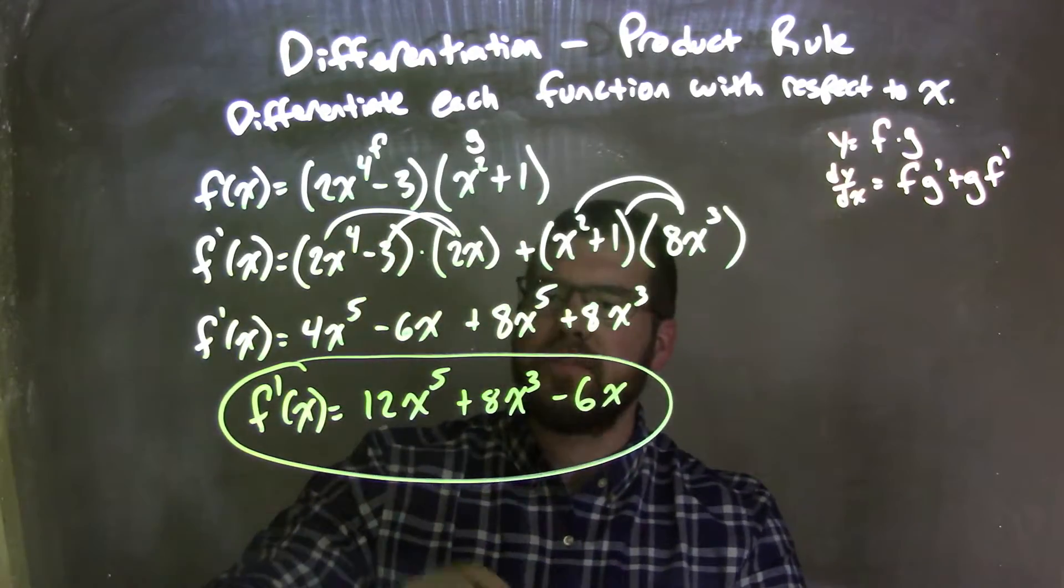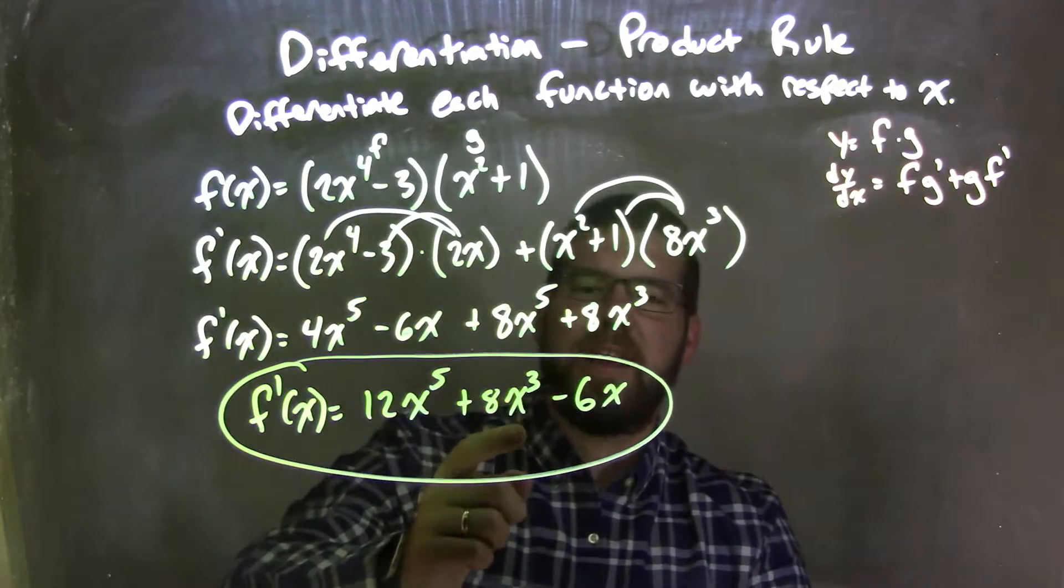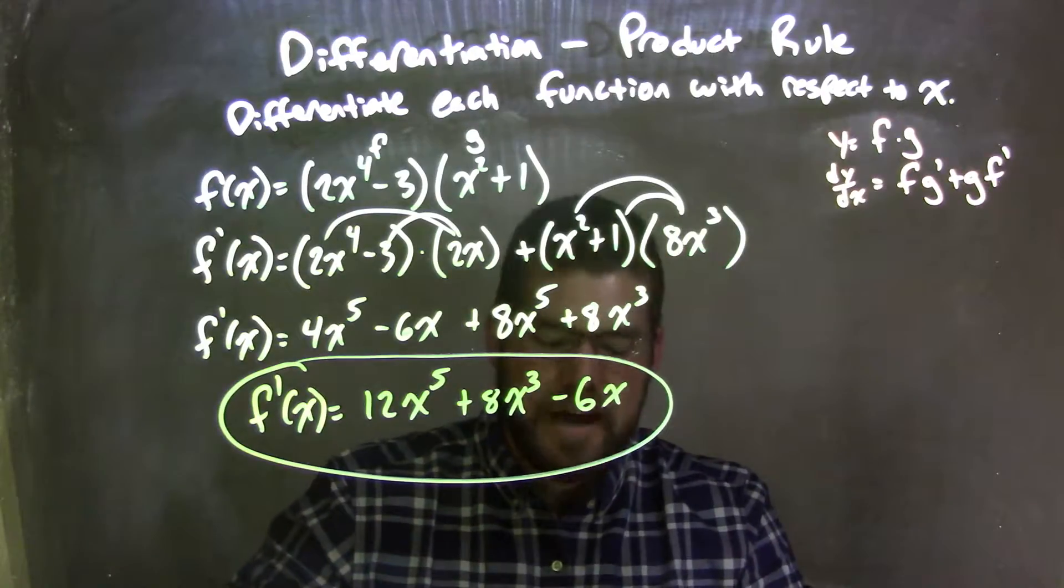So our final answer, f prime of x is equal to 12x to the 5th plus 8x to the 3rd minus 6x.